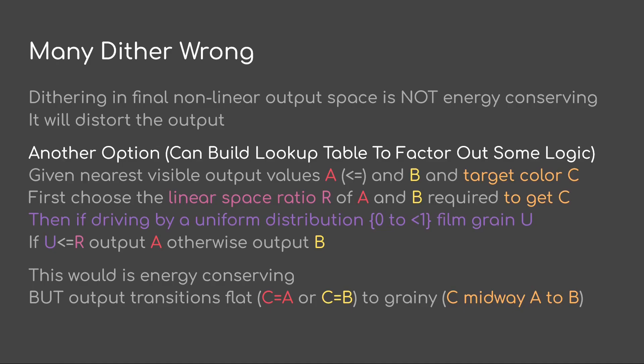Note there's a problem: most people do dither wrong. If you dither in the non-linear output space, that is definitely not going to be energy conserving — it will regrade the output. If we want to do energy-conserving dithering, here's an example. Given a target color C, we first compute the nearest visible output values in the perceptual space: A for less than or equal to C, and B for greater than C, so A is darker than B. We choose the linear space ratio of A and B required to get C — we take A, B, and C, convert them back to linear, and figure out what ratio of A and B produces C.